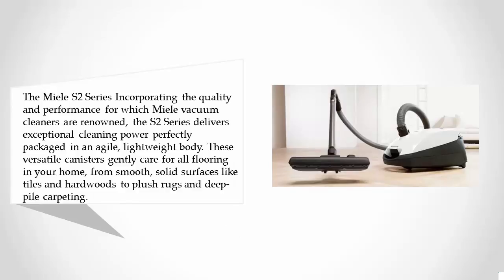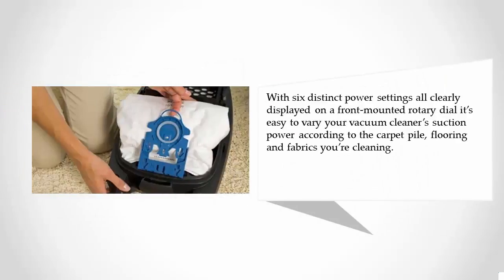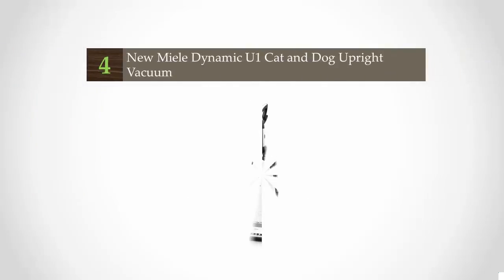These versatile canisters gently care for all flooring in your home, from smooth solid surfaces like tiles and hardwoods to plush rugs and deep pile carpeting. With six distinct power settings all clearly displayed on a front-mounted rotary dial, it's easy to vary your vacuum cleaner's suction power according to the carpet pile, flooring, and fabrics you're cleaning.